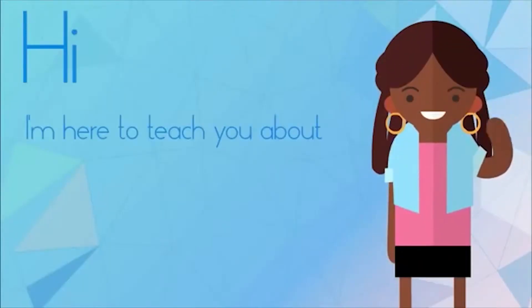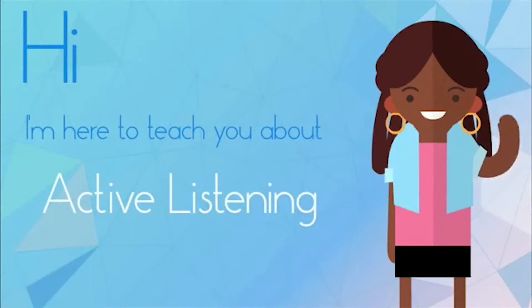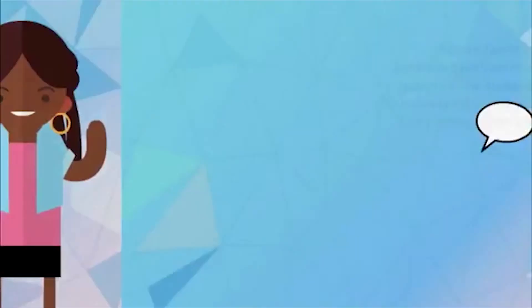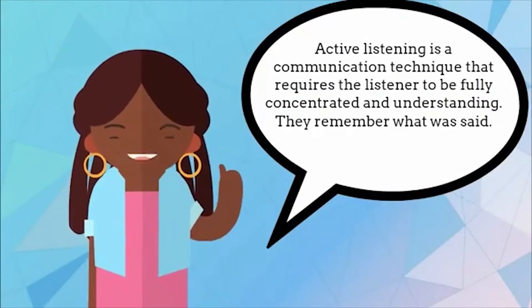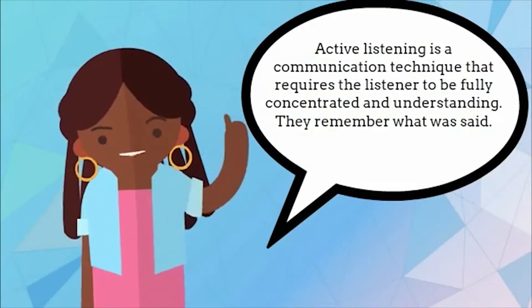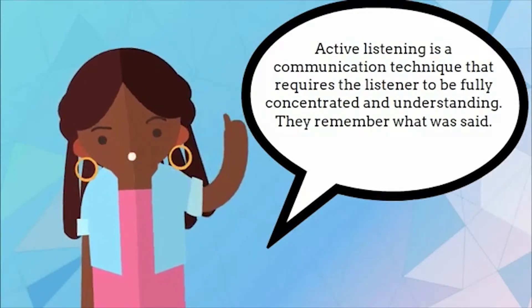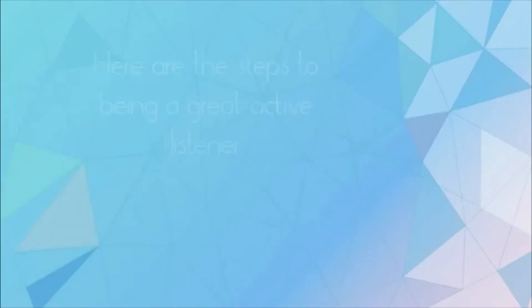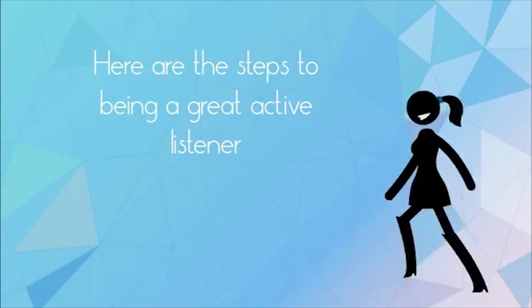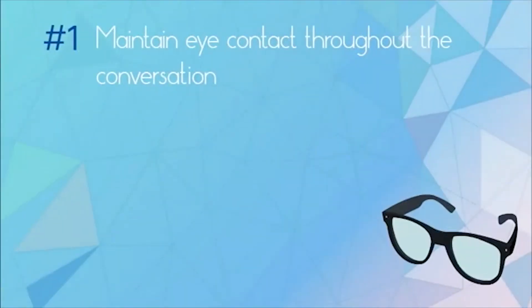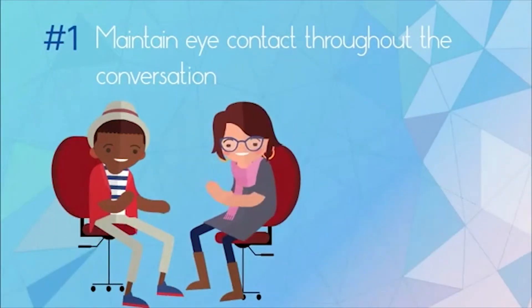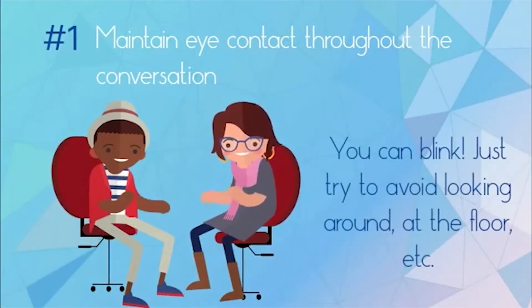Active listening is a communication technique that requires the listener to be fully concentrated and understanding — they remember what was said. Here are the five steps to being a great active listener. Step one: maintain eye contact throughout the conversation. You can blink — just try to avoid looking around at the floor, etc.